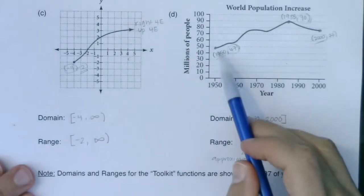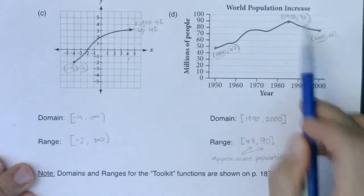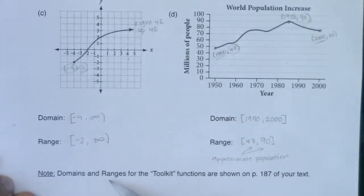So we had left to right and then low to high. I'm going to flip over to my computer and I just want us to take a look at domains and ranges for those toolkit functions. And those are going to show up on page 187 of your text. So I'll flip to my computer and I'll see you in a bit.